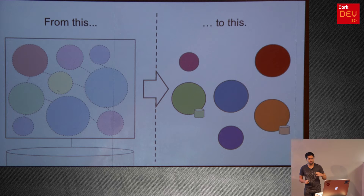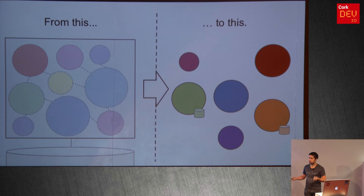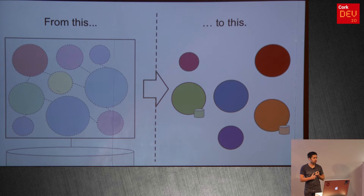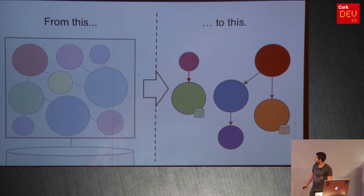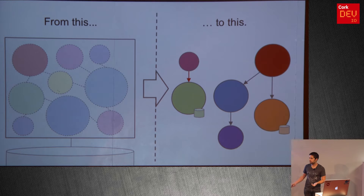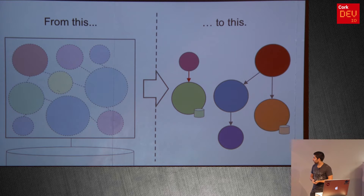Inside the monolith, these interactions are very implicit — we don't really think about them on an everyday basis. They might be different jars, different packages. The interactions are method calls based on interfaces — a function name, objects returned with fields. We don't really think about them because if we change a method name, the compiler gives out and we fix it straight away. If we change the class signature or fields, the compiler catches that. Most of the time we don't make these mistakes because we use IDE refactoring. But when we move to microservices, these interactions become the core concern.